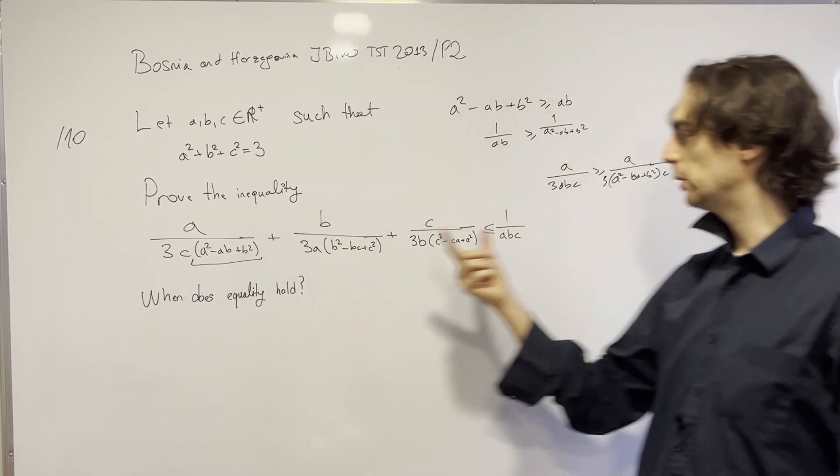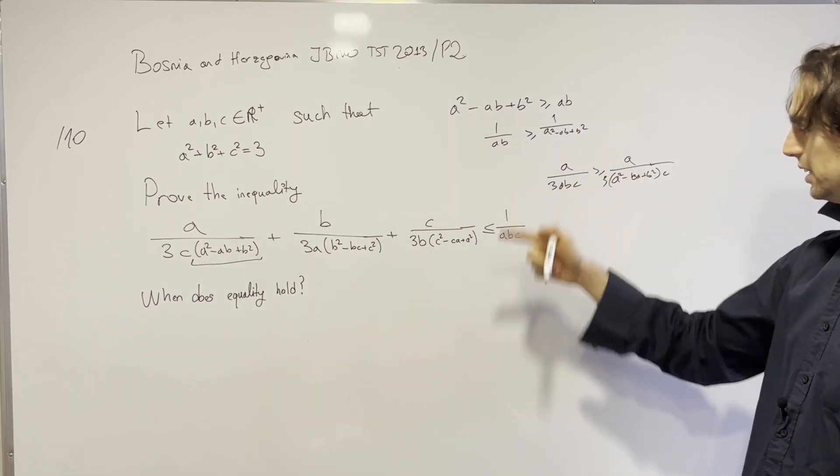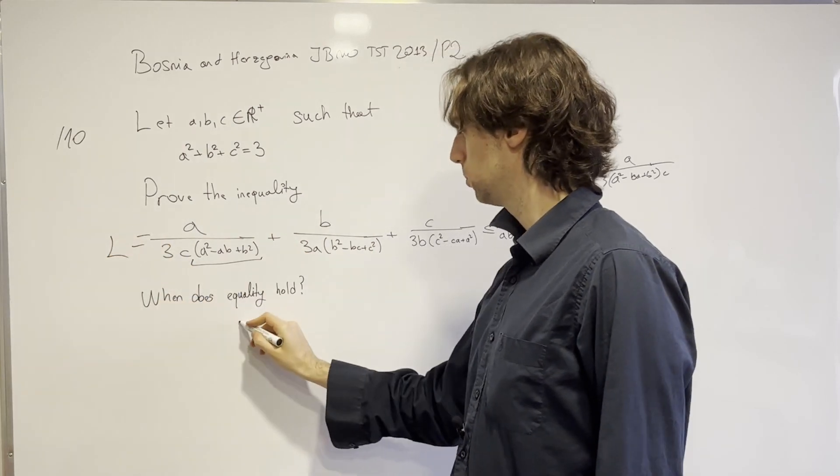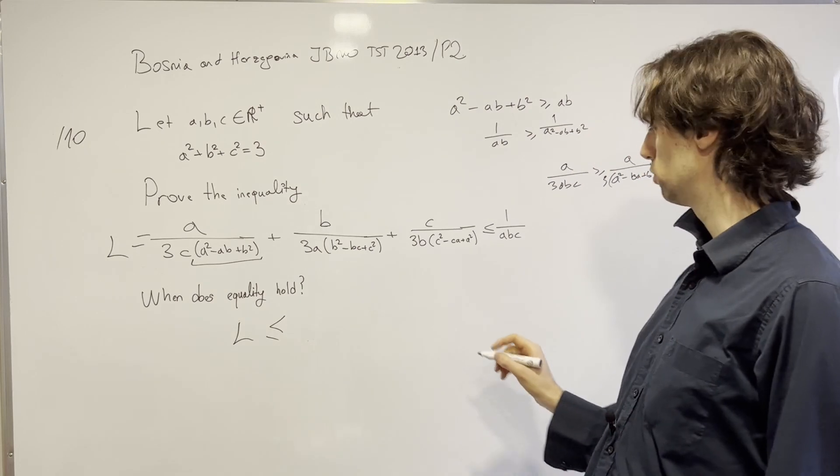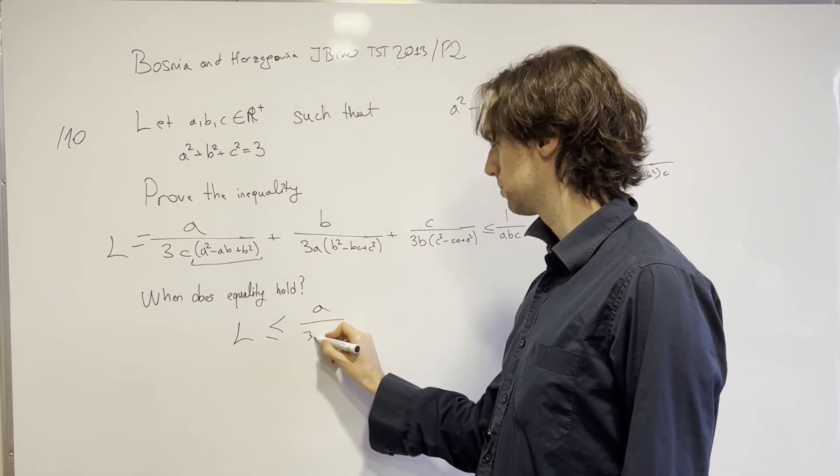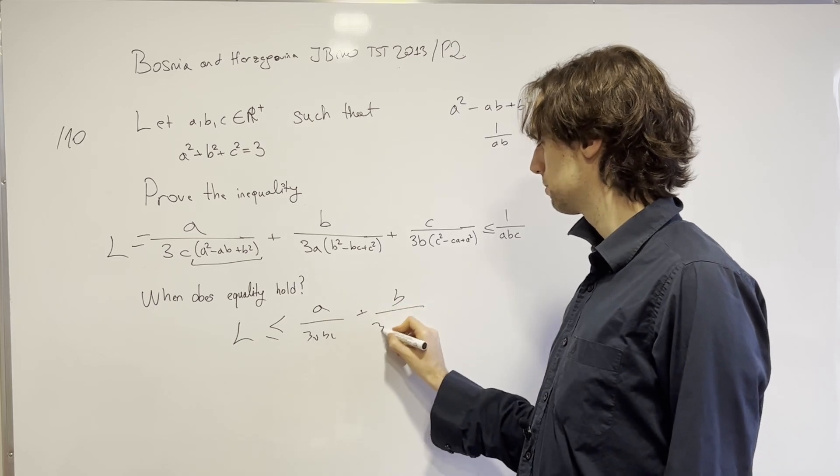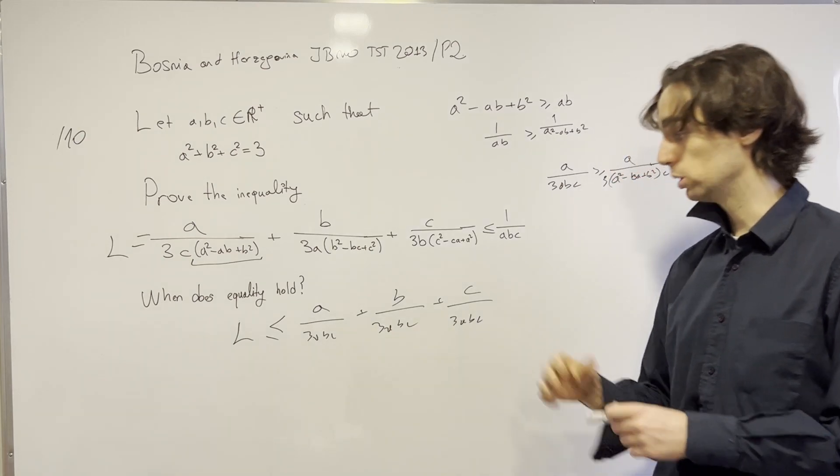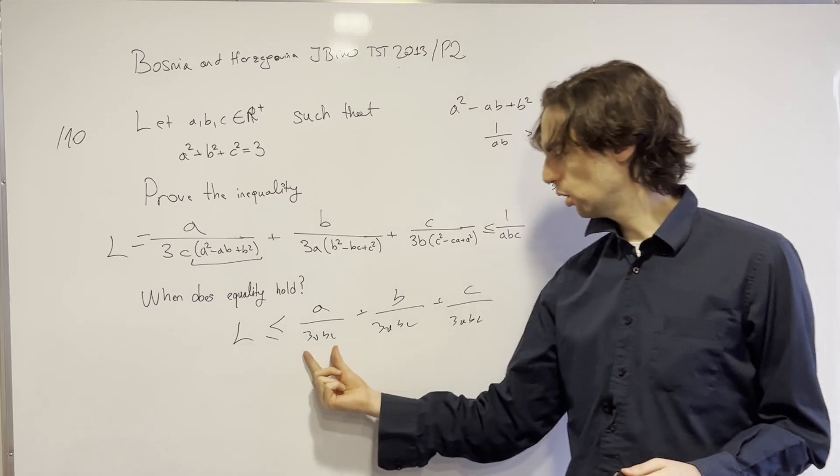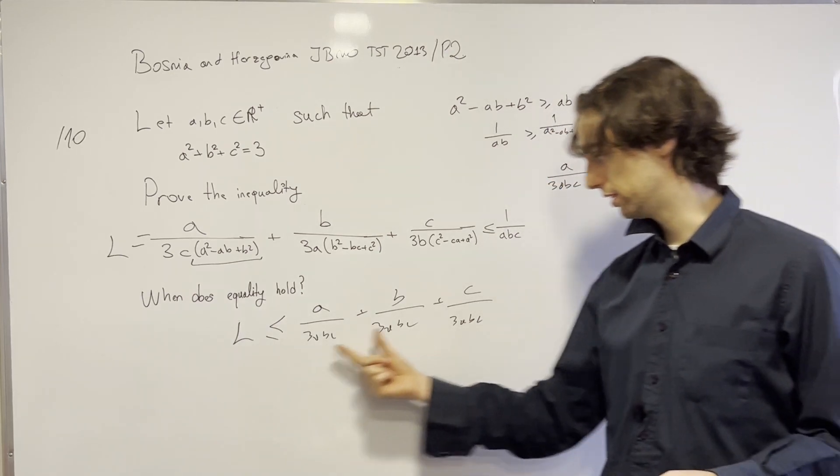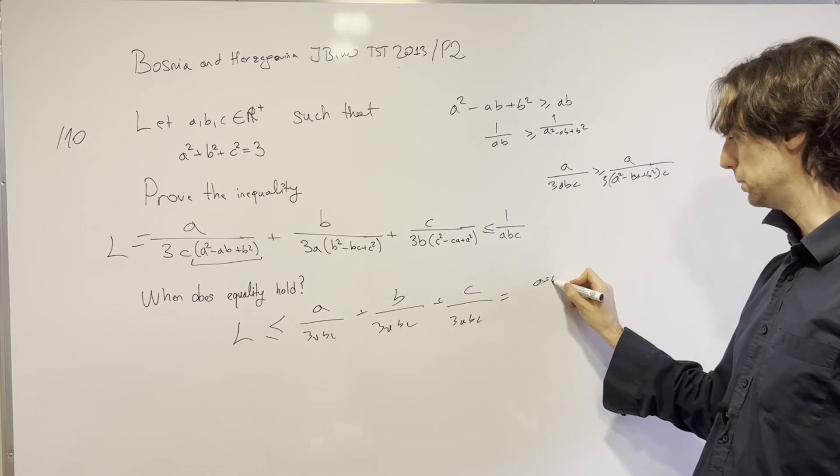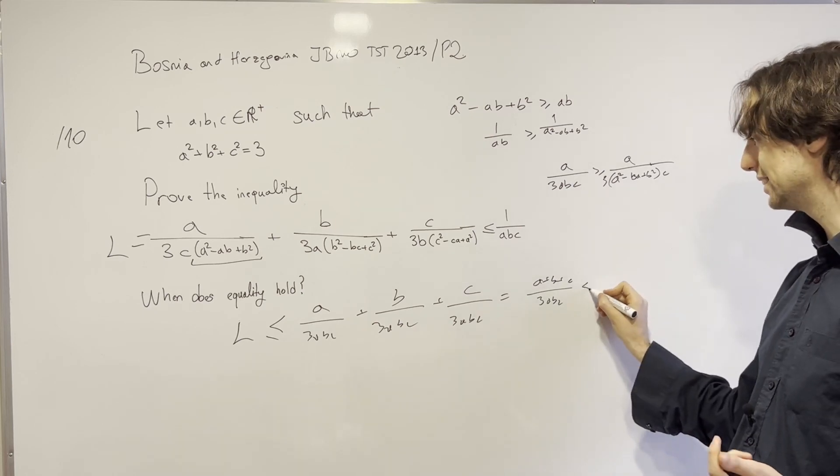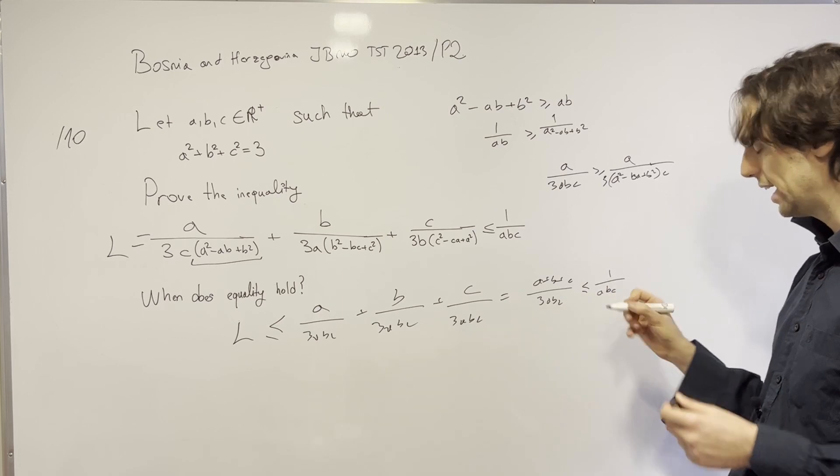is because if I apply to every single one of these, I'll get something that looks like—I'll get that this expression, call it the left hand side, let's call it L. We'll get that L is less than or equal to a/(3abc) + b/(3abc) + c/(3abc).